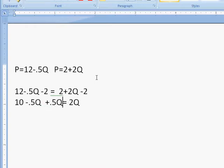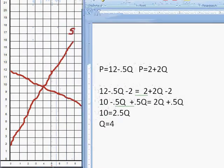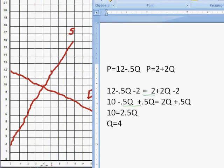And then we're going to end up with 10 on the left-hand side equals 2.5Q. So 2.5Q, if we divide both sides by 2.5, then we can see that Q is indeed equal to 4, like our graph was suggesting to us.